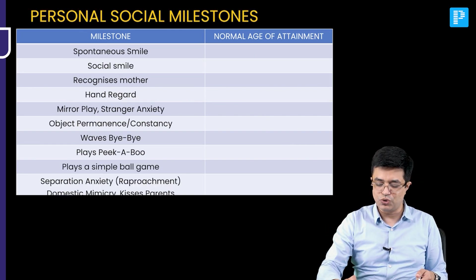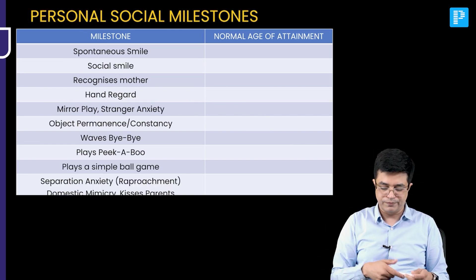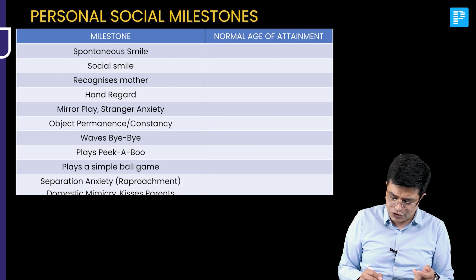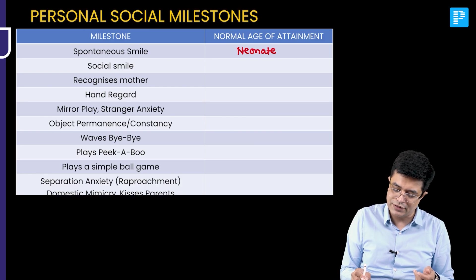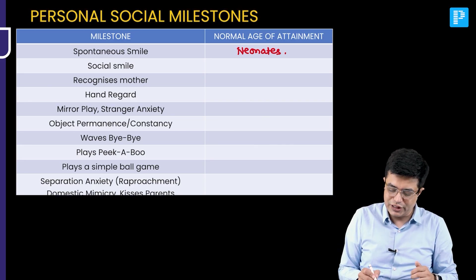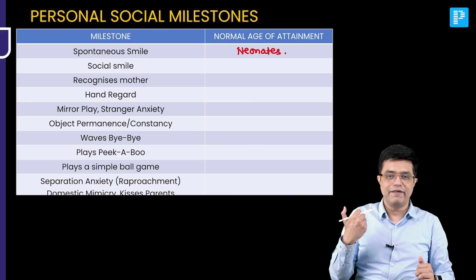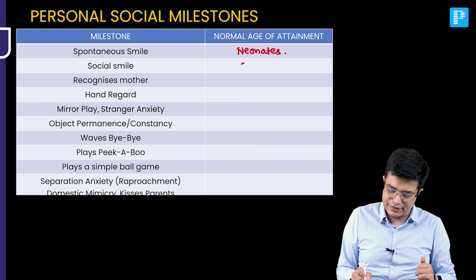Then we have the personal social or cognitive milestones. First of all, spontaneous smile — smiling in the absence of a stimulus — begins in the newborn period. Social smile, meaning smiling when you speak to, look at, or smile at the child, begins at 2 months of age.